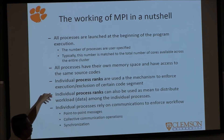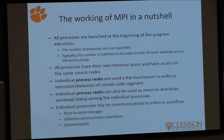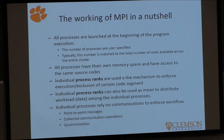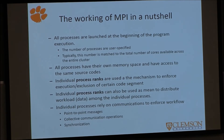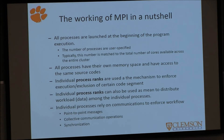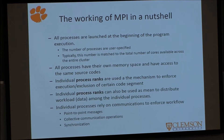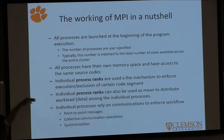Individual process ranks can also be used to distribute the workload among processes. For example, if you have 10,000 lines of data to divide among 10 processes, instead of each process loading all 10,000 lines, you can give each process an index of the data calculated based on its process rank. We'll see how to do that later.